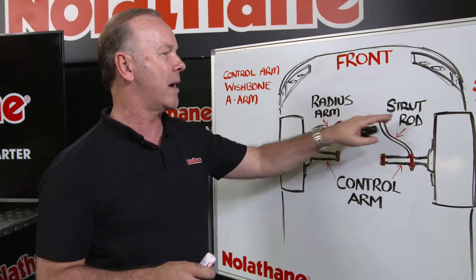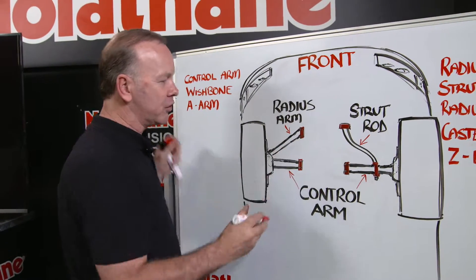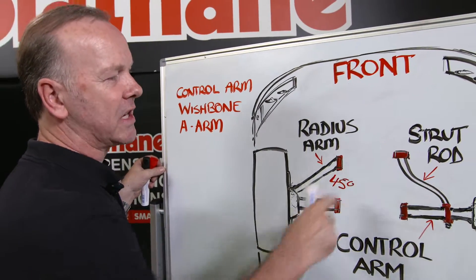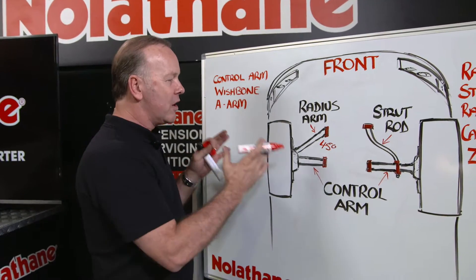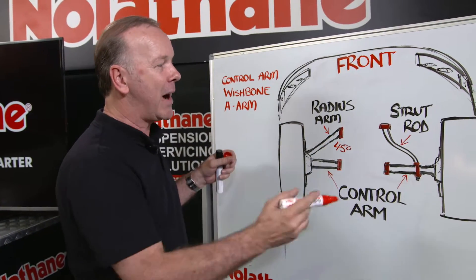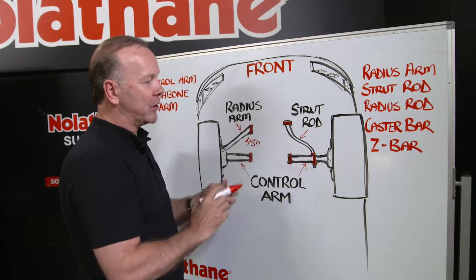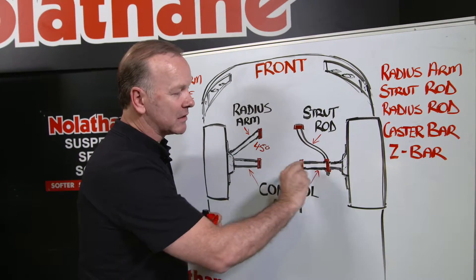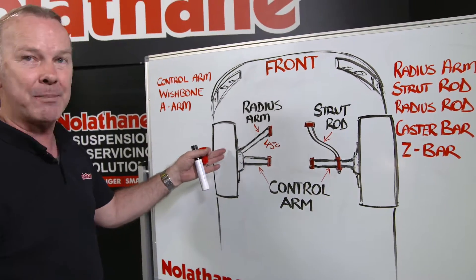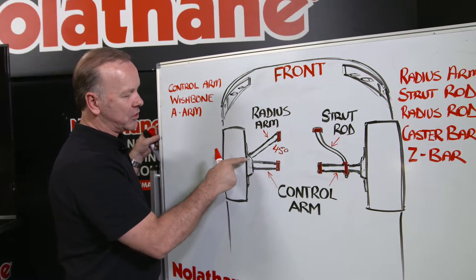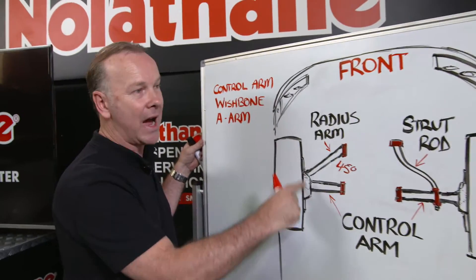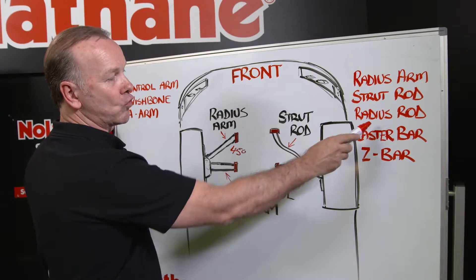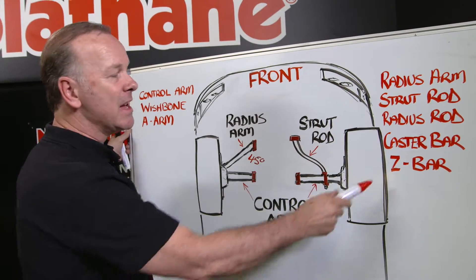Then of course we've got our radius arm or our strut rods. They're out the front — I've drawn two different variations here. They go out generally at about 45 degrees, and they're called a radius arm because they can control the radius that all of this moves in; they're adjustable. In older applications, you'll see instances where that's called a strut rod, where it fixes to the control arm somewhere along its length. In a more modern application, it's a radius arm, which attaches directly to the upright or the hub. So some of the common names for that over the years have been radius arm, strut rod, radius rod, caster bar, even a Z bar.